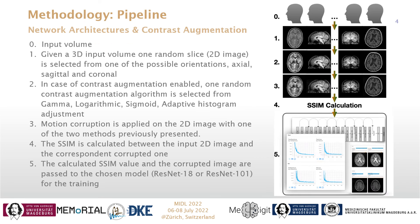Now let's have a look at the complete pipeline of this research. Given one 3D volume as input during every epoch of training and validation, one slice in one of the three possible orientations was randomly chosen. We also used contrast augmentation techniques such as random gamma, logarithmic sigmoid manipulations, and adaptive histogram adjustment. If the contrast augmentation was enabled during an experiment, then it is applied to the selected slice.